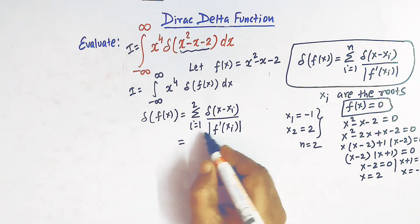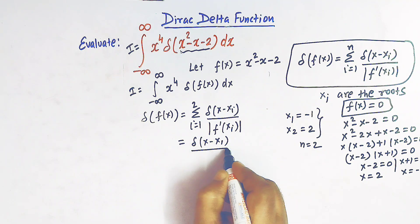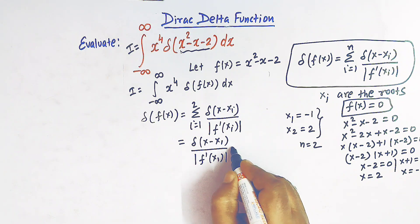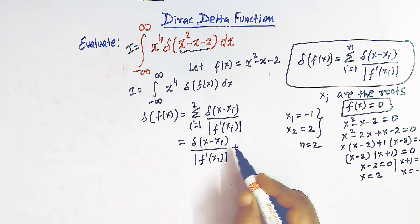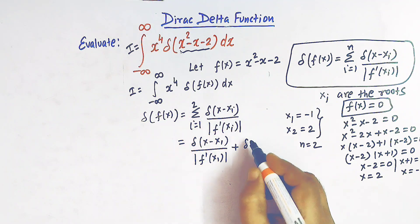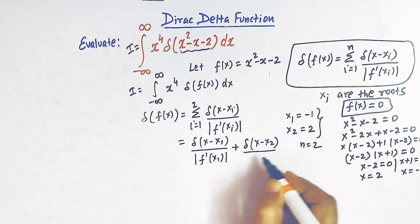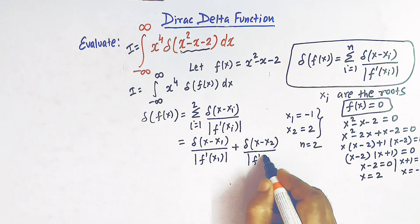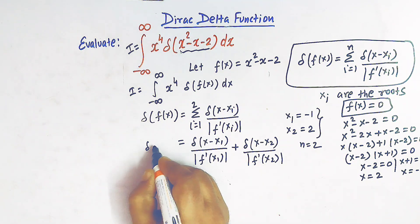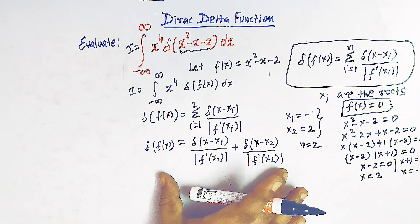Taking i = 1, we have delta of (x minus x1) divided by the absolute value of f prime of x1, plus — from the sigma notation — delta of (x minus x2) divided by the absolute value of f prime of x2. So we now have delta of f(x) equal to this expanded expression.